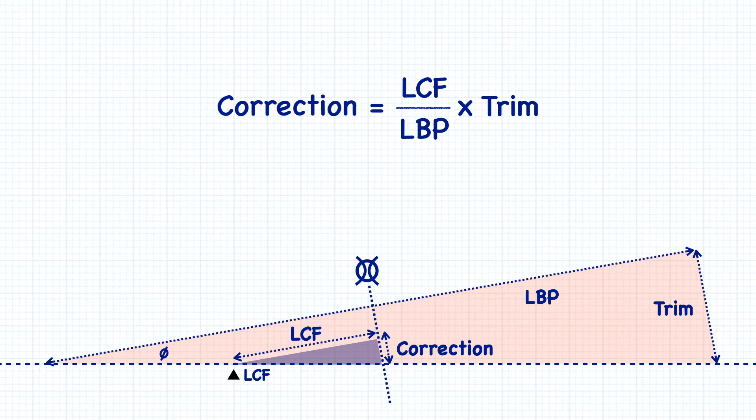If you notice, this formula is very similar to our last trim correction, and all we've done here is to calculate what portion of the total length is from midships to the LCF. That percentage is then multiplied by either the trim or a change of trim to get the correction.